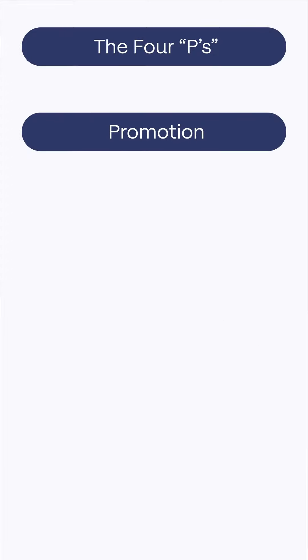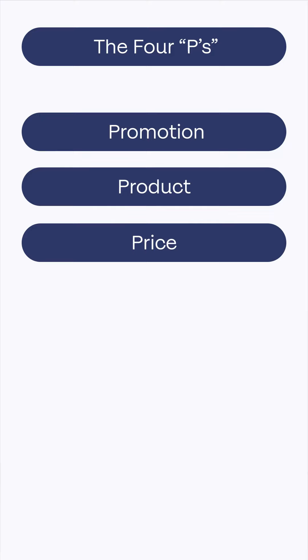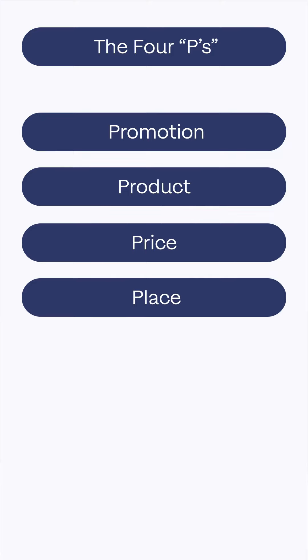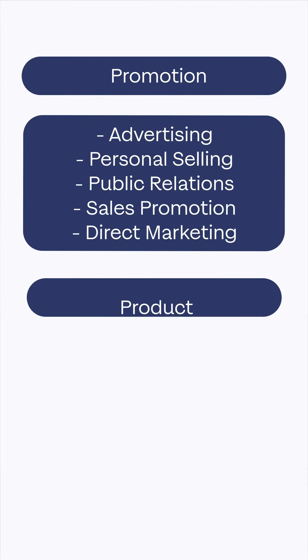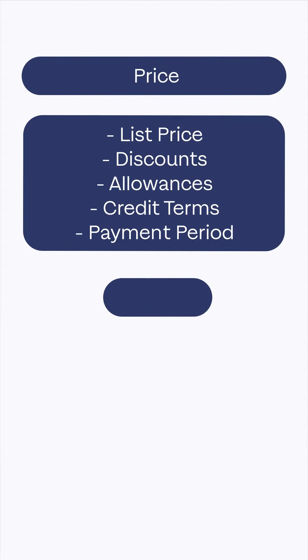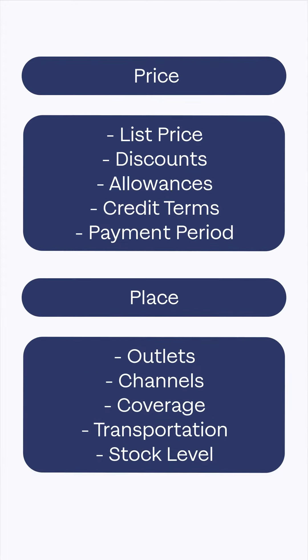Let's talk about the four P's: promotion, product, price, and place. The four P's are considered integral factors of marketing that are manageable and predictable by the organization. It's also called the marketing mix. The promotion is the message to the consumer. The product is the object, service, or concept. The price is the amount for the product, and the place is how the product is displayed to attract buyers.